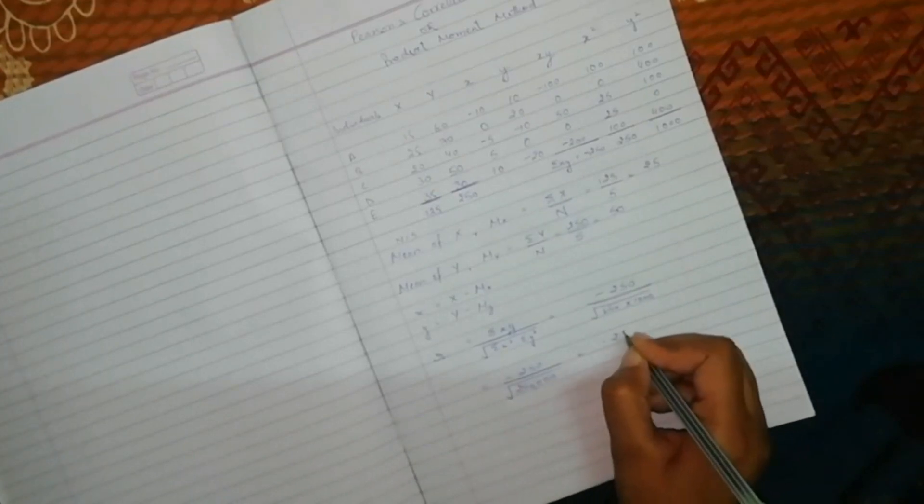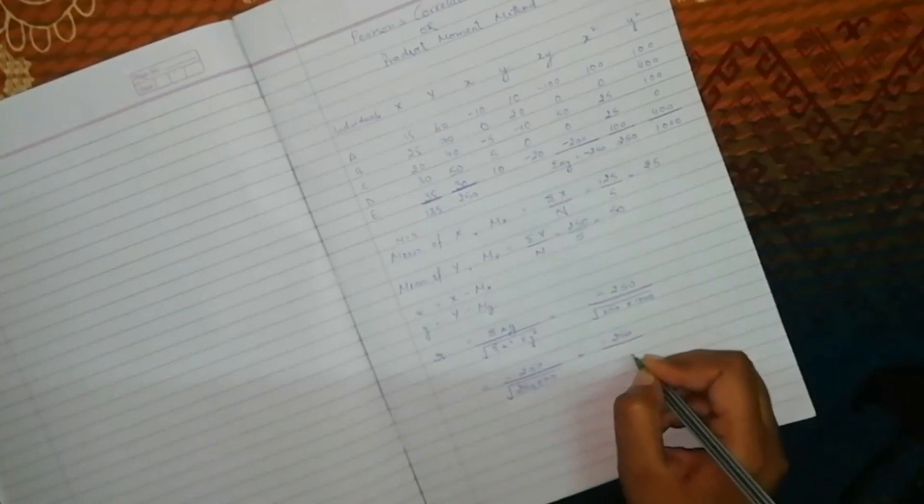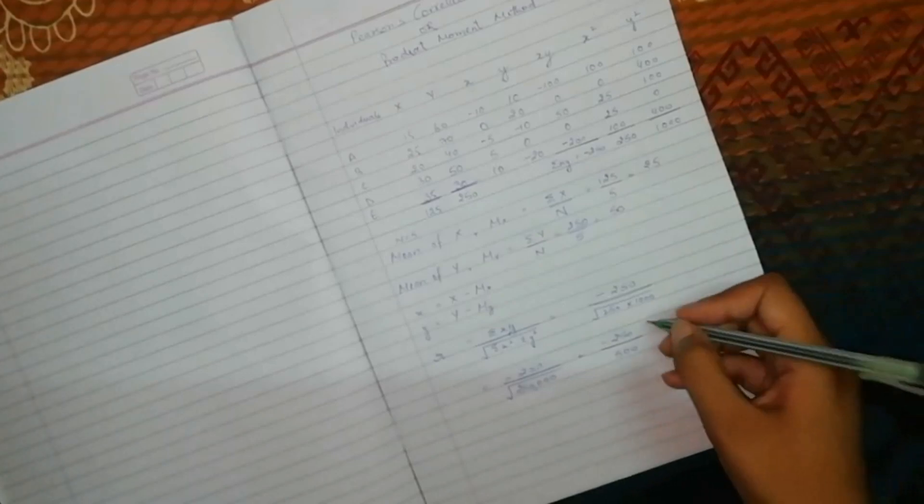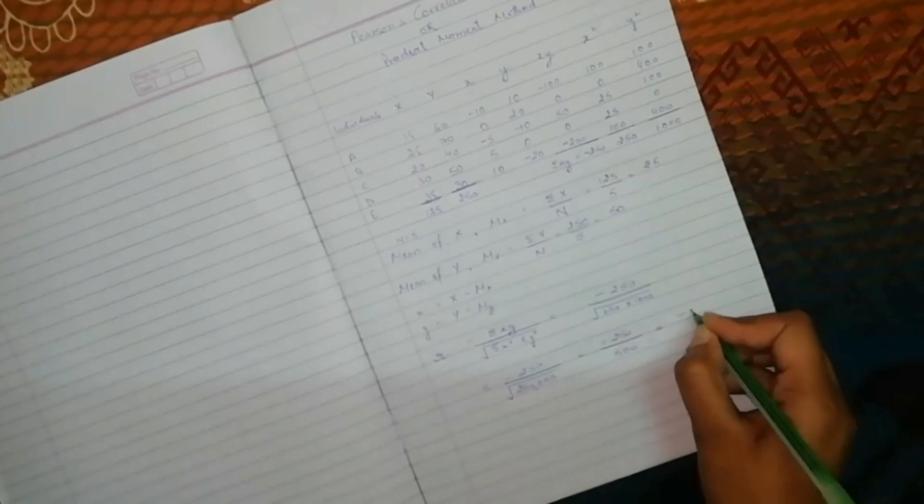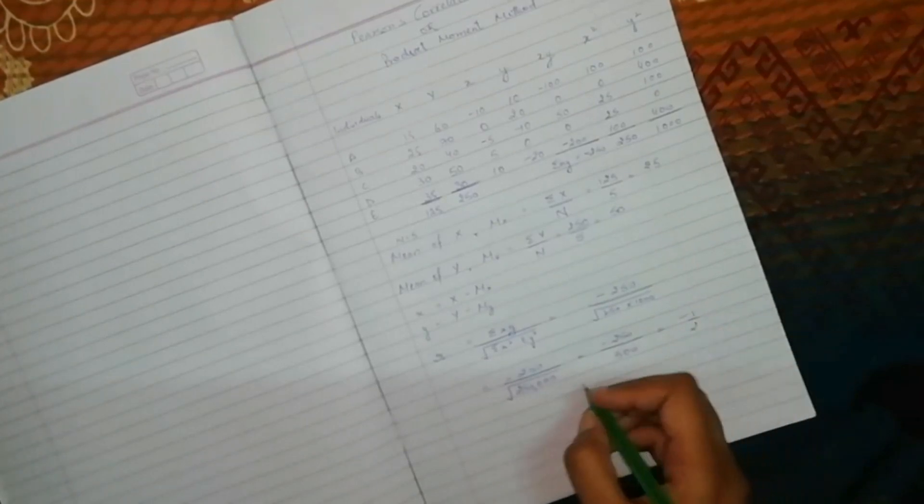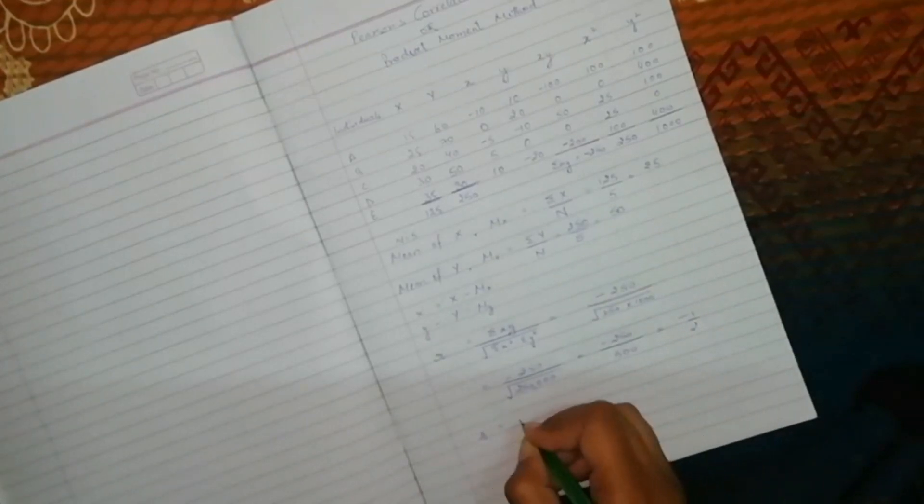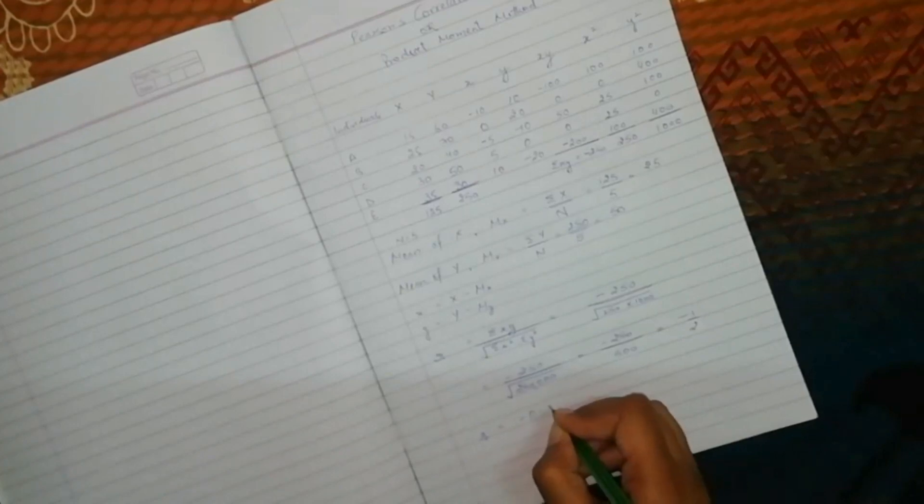This will be minus 250 divided by 500. Now, you can divide 250 and 500. So, the answer will be minus 1 upon 2, which will be minus 0.5.